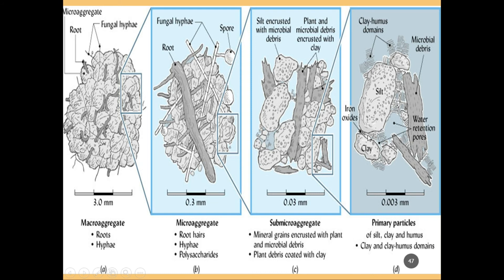As we get even smaller, we see humus, microbial debris, and very small silt and clay particles. Larger pores contain water that is plant available, while smaller pores contain water that is not plant available but would still be microbially available.